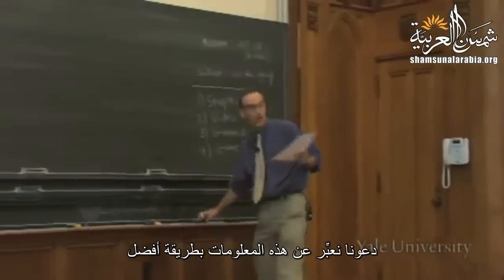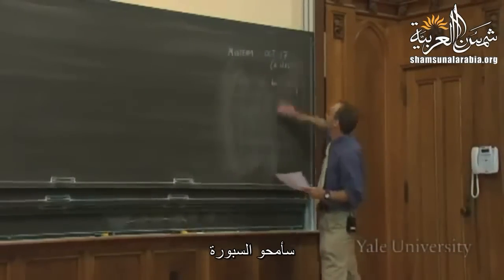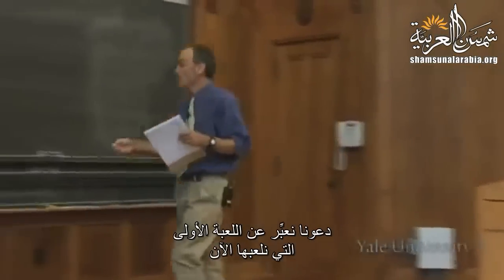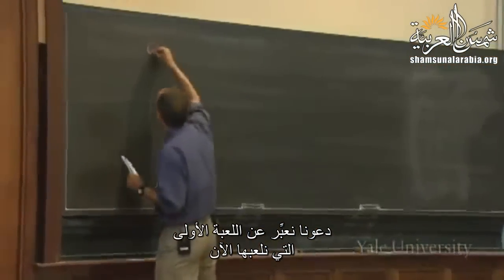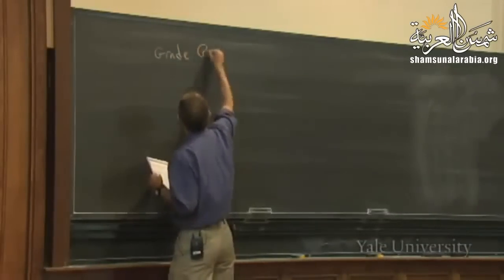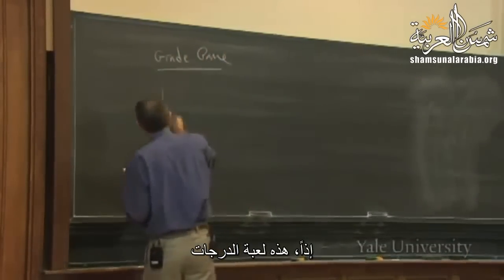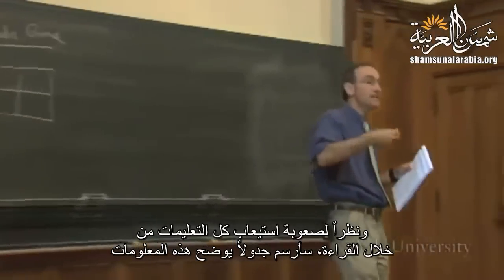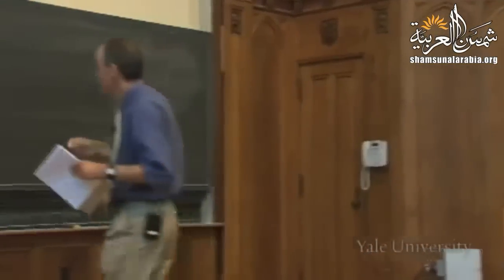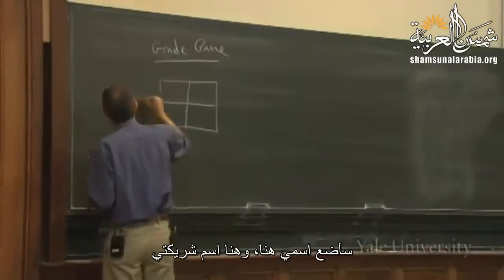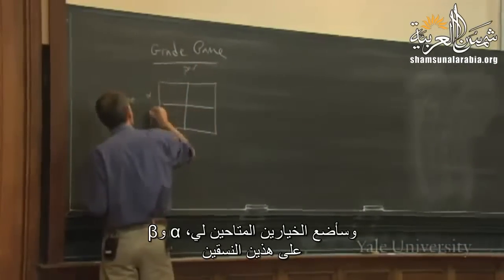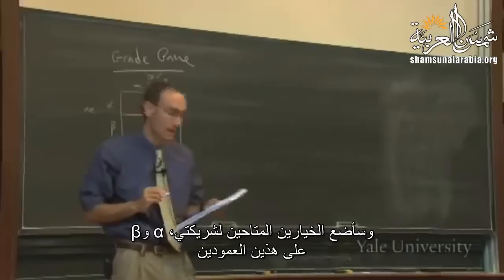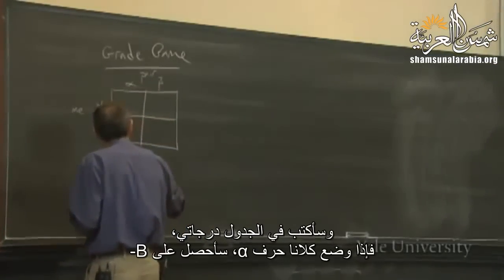Before we talk about this, let's collect the information in a more useful way. This is our grade game. I'm going to make a table: I put 'me' here and 'my pair' here, with alpha and beta as the choices I can make on the rows and alpha and beta for my pair on the columns. In this table I'll put my grades.